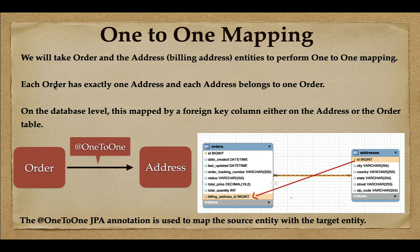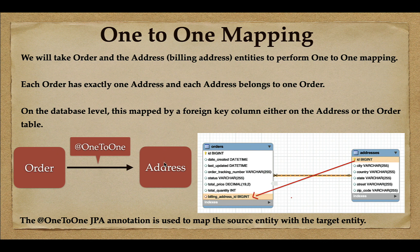Each order has only one billing address and each billing address belongs to only one order — this is one-to-one mapping. To perform one-to-one mapping in domain entity classes in a Java project, we use the JPA annotation @OneToOne to map the source entity with the target entity. In our case, Order is the source entity and Address is the target entity.